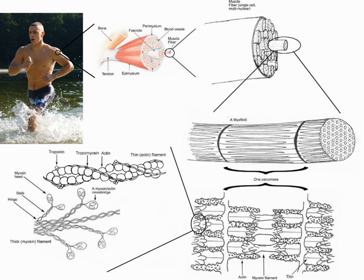The anatomy of muscles includes gross anatomy, which comprises all the muscles of an organism, and microanatomy, which comprises the structures of a single muscle.